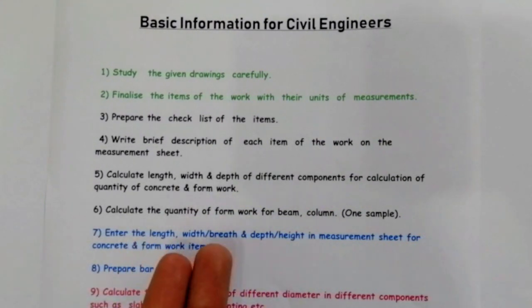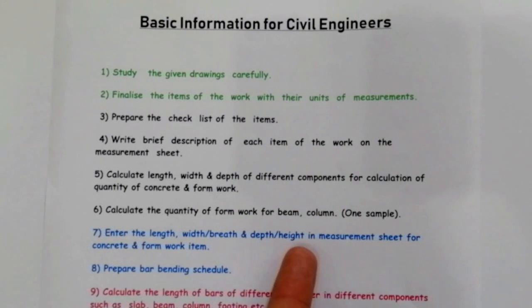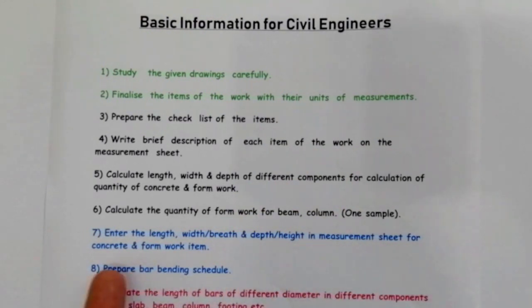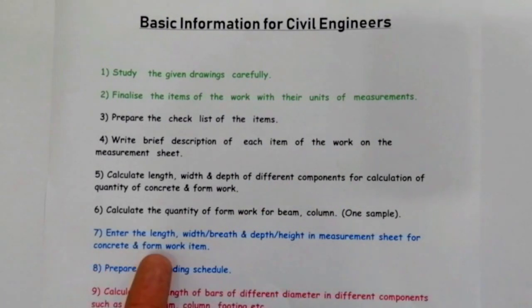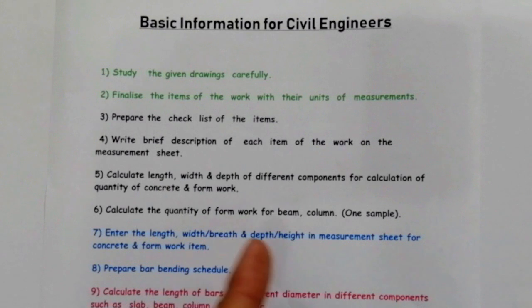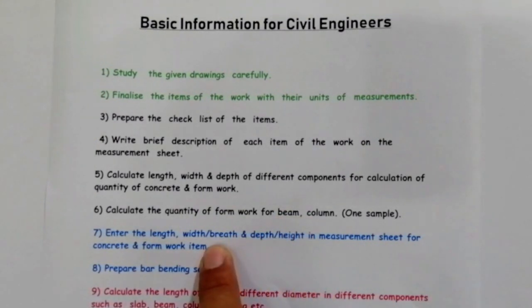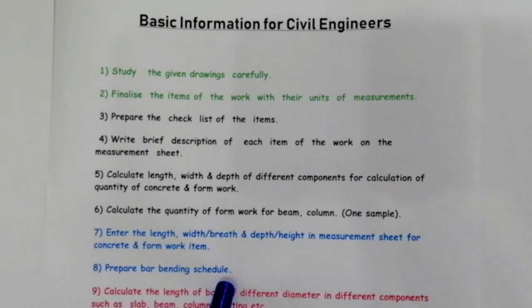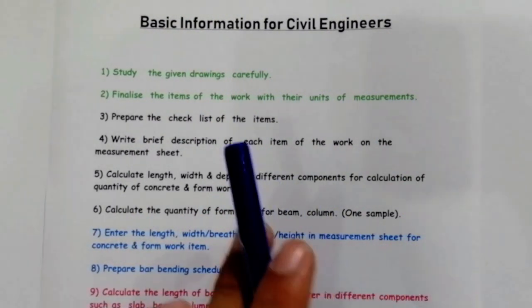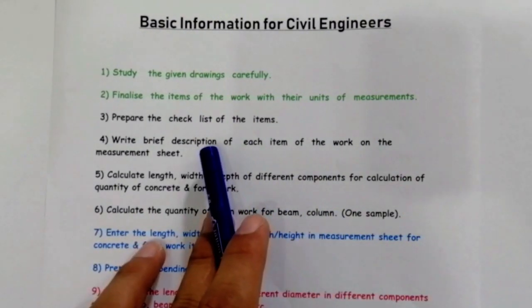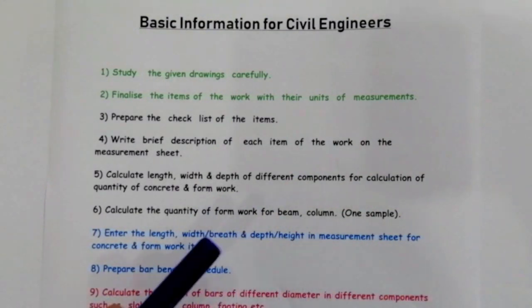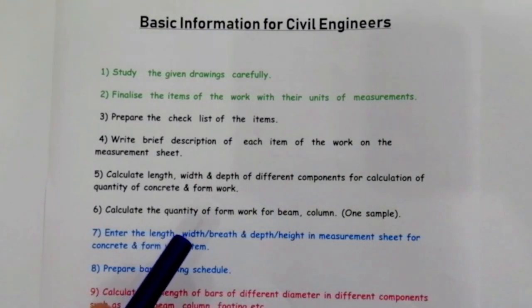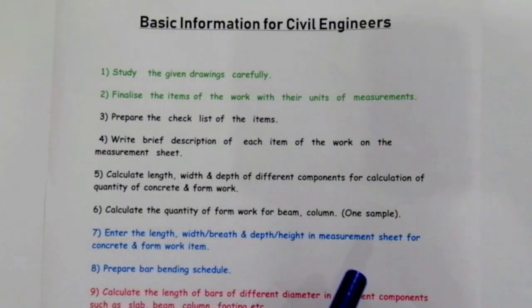The seventh point is: enter the length, width, and depth or height in the measurement sheet for concrete and formwork items. The eighth point is: prepare the bar bending schedule, especially for steel weight. In bar bending schedule you can calculate the quantity of steel for beam, column, slab, etc. for building constructions.